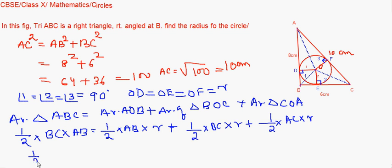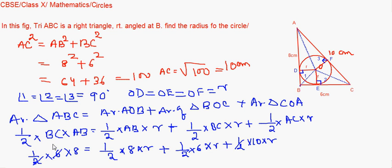So it is half, base is 6, and this is 8. This is equal to half AB is given by 8 into R plus half BC is 6 into R plus half AC is given by 10 into R. So on the left I am getting 24.